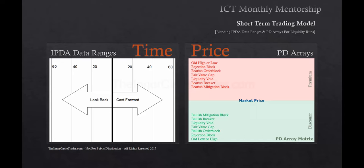As you move forward, you're casting forward for a new set of 20, 40, and 60 — each new day you shift that range forward. The look back period gives you the context to frame the PD arrays with a reference point in time.